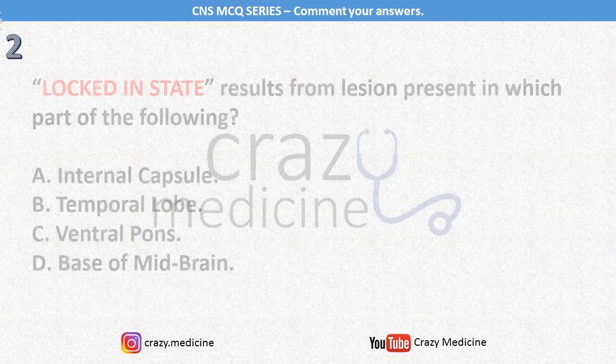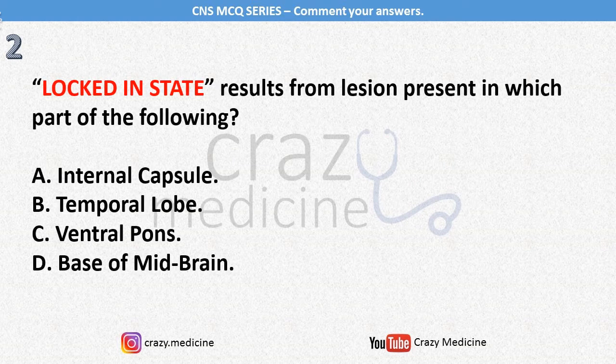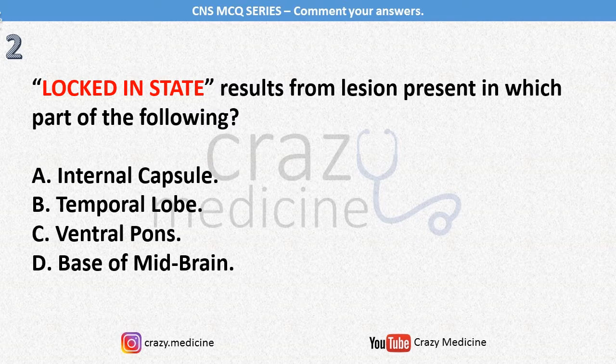Second, locked-in state results from a lesion present in which of the following? Options are: internal capsule, temporal lobe, ventral pons, and basis of midbrain. This MCQ can be solved by two ways — either by ruling out options or by knowing the basic anatomical concept of CNS. Details I will discuss in the solution video.